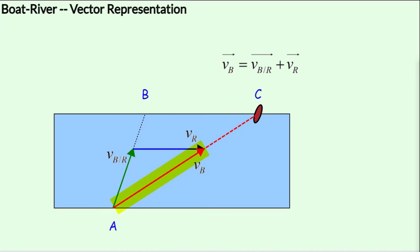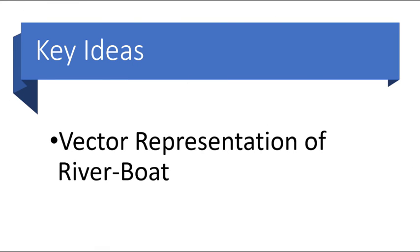The velocity of the boat with respect to the ground is a vector addition of the velocity of the boat with respect to the river and the velocity of the river. If we represent the velocity of a boat with respect to the river and the velocity of the river in a vector diagram, the resultant will be the velocity of the boat with respect to the ground. The velocity of the boat with respect to the ground represents the actual path of the boat as seen by a stationary observer on the ground.